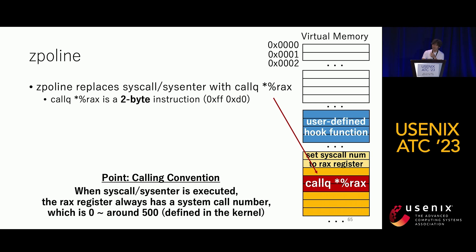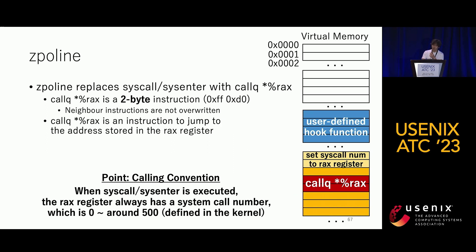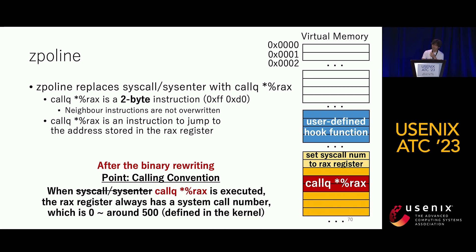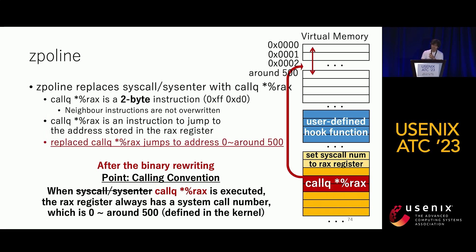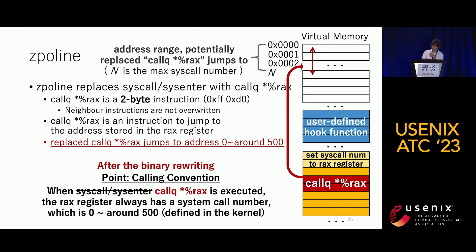What Zeppelin does is replace syscall and sysenter with the instruction 'call *%rax'. This instruction is two bytes, so neighboring instructions are not overwritten. This instruction jumps to the address stored in the RAX register. After the binary rewriting, when 'call *%rax' is executed, RAX always has a system call number — so it always jumps to an address between zero and around N, where N is the maximum system call number.